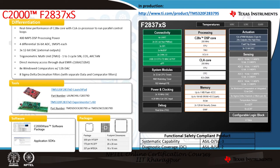The F2837XS is a cut-down version of F2838XD, with one C28X at 200 MHz and one CLA at 200 MHz, giving a total of 400 MIPS of processing power. It has 4 differential 16-bit ADCs, a floating point unit, a trigonometric math unit, and broad computation capabilities. This device comes in 3 packages and is also functionally safety compliant for ASIL-D and SIL3.